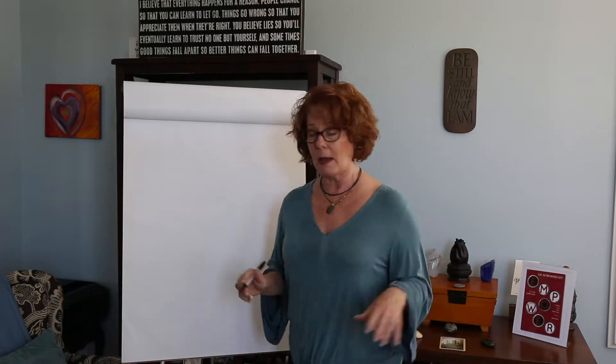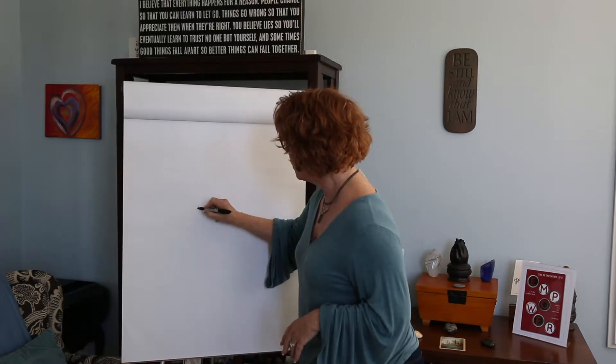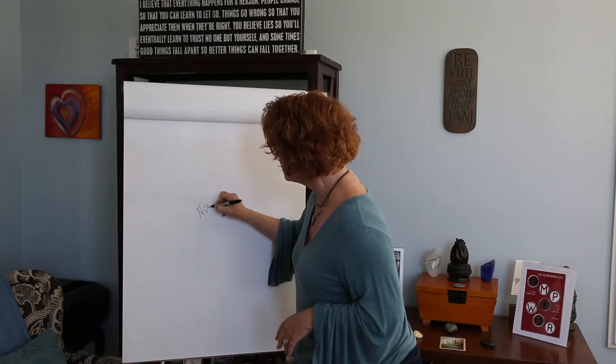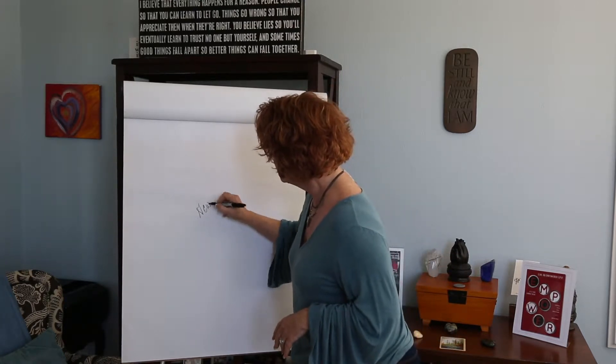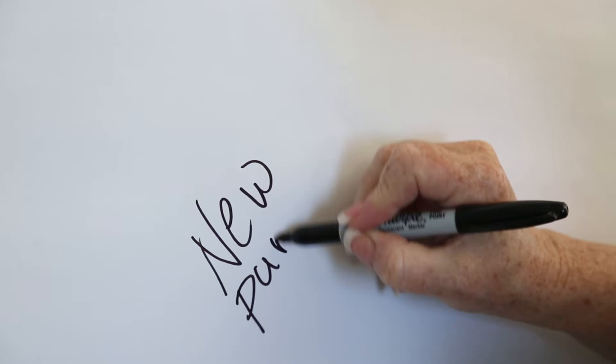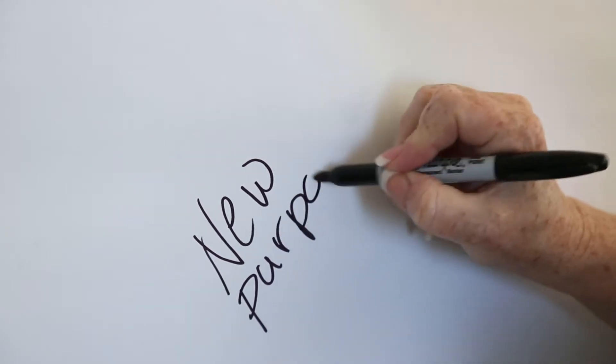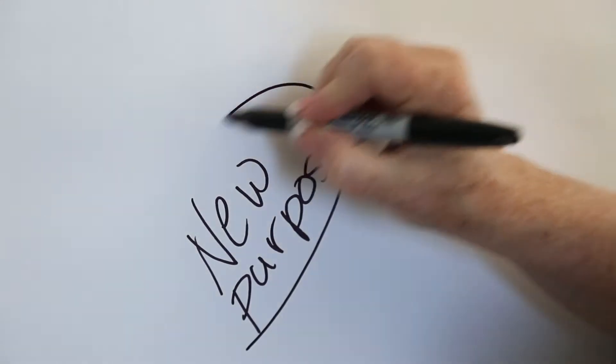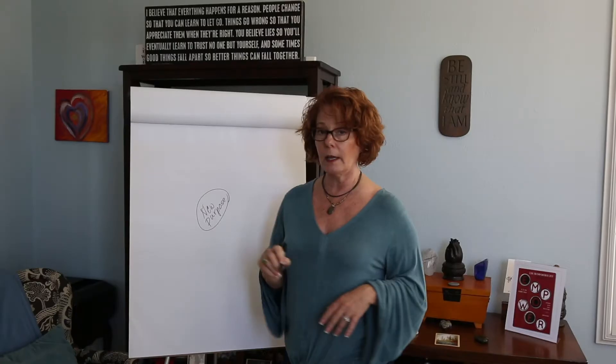So here's how you do a mind map. You write what it is you're mind mapping — so this is 'new purpose' — and you put a circle around it.